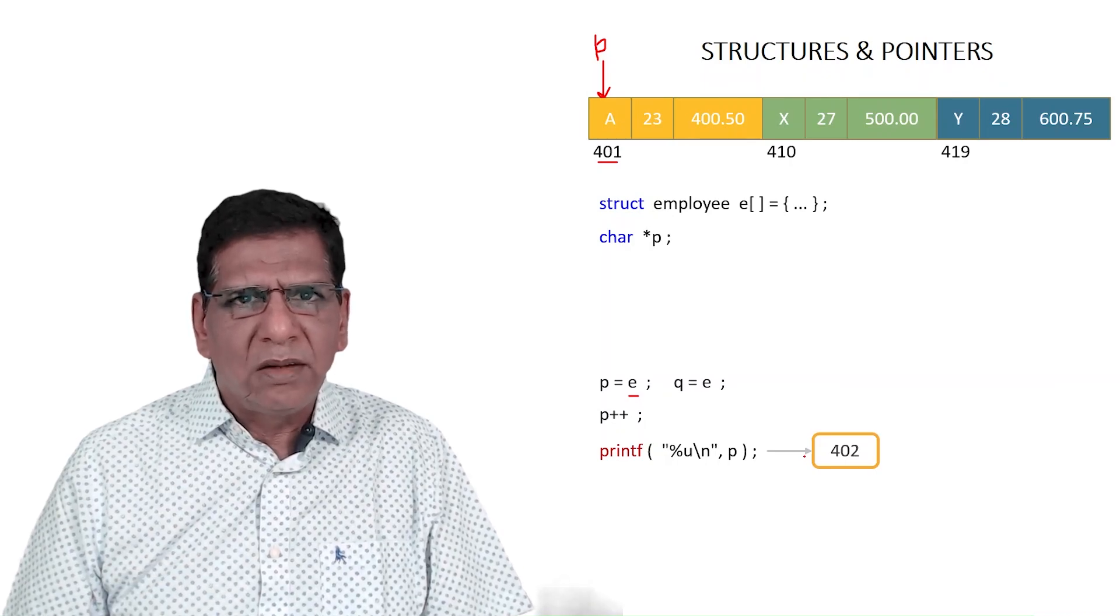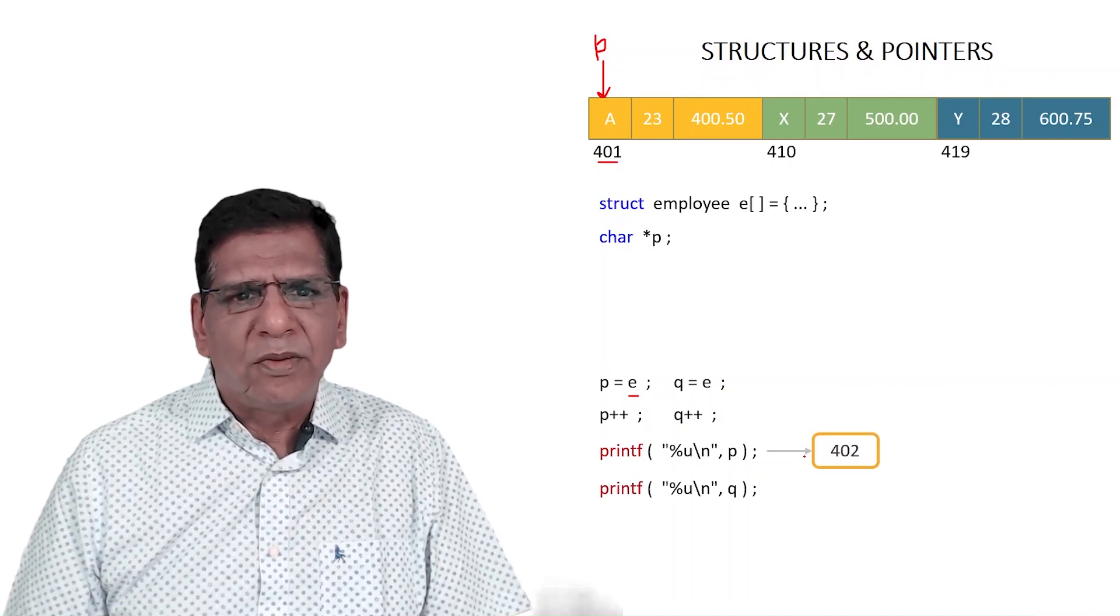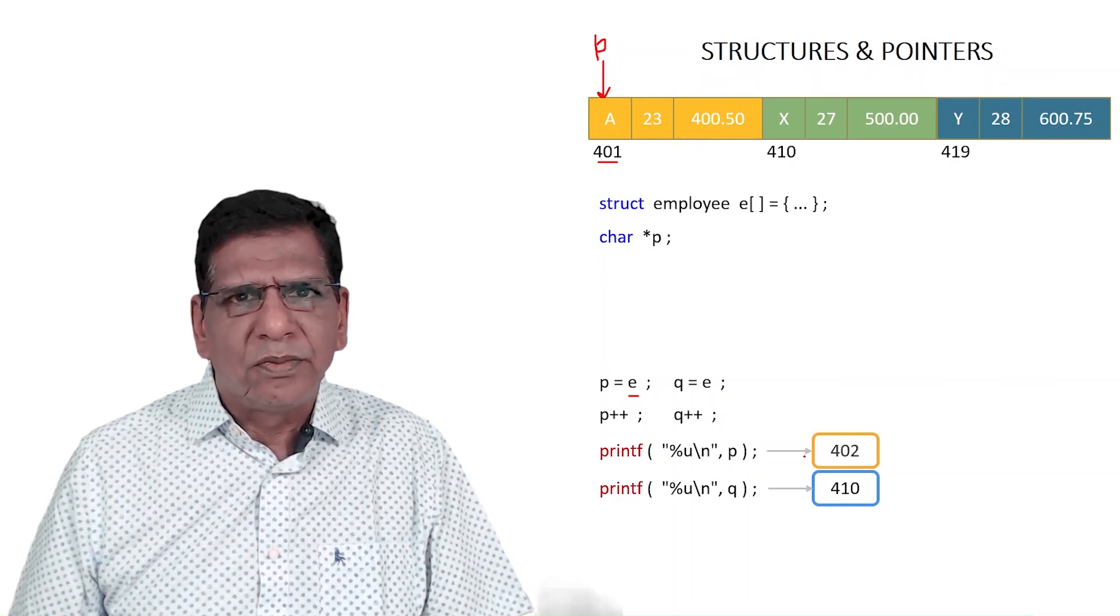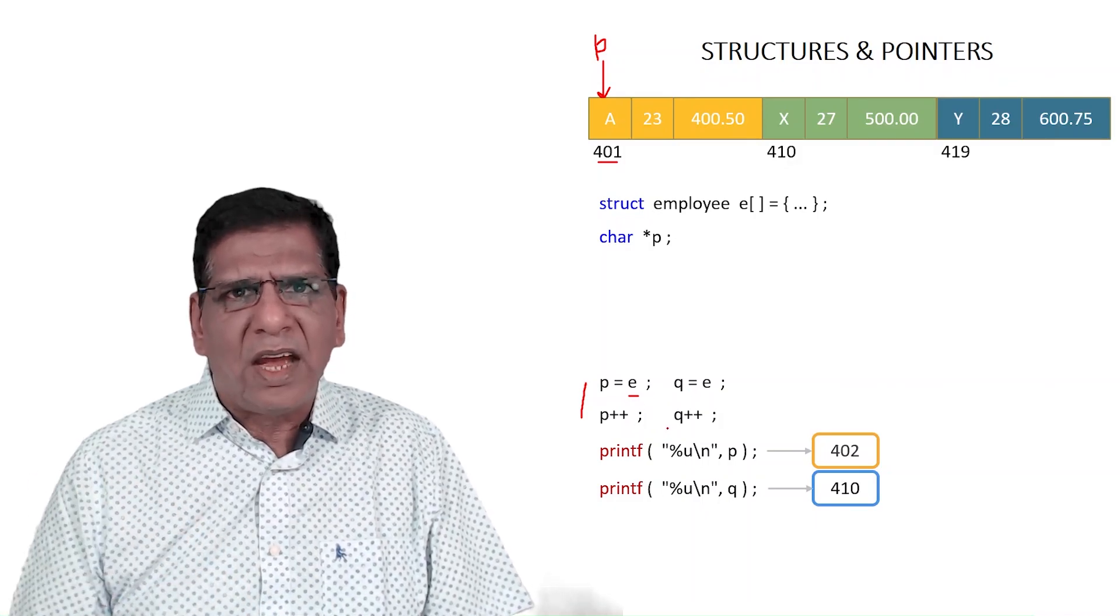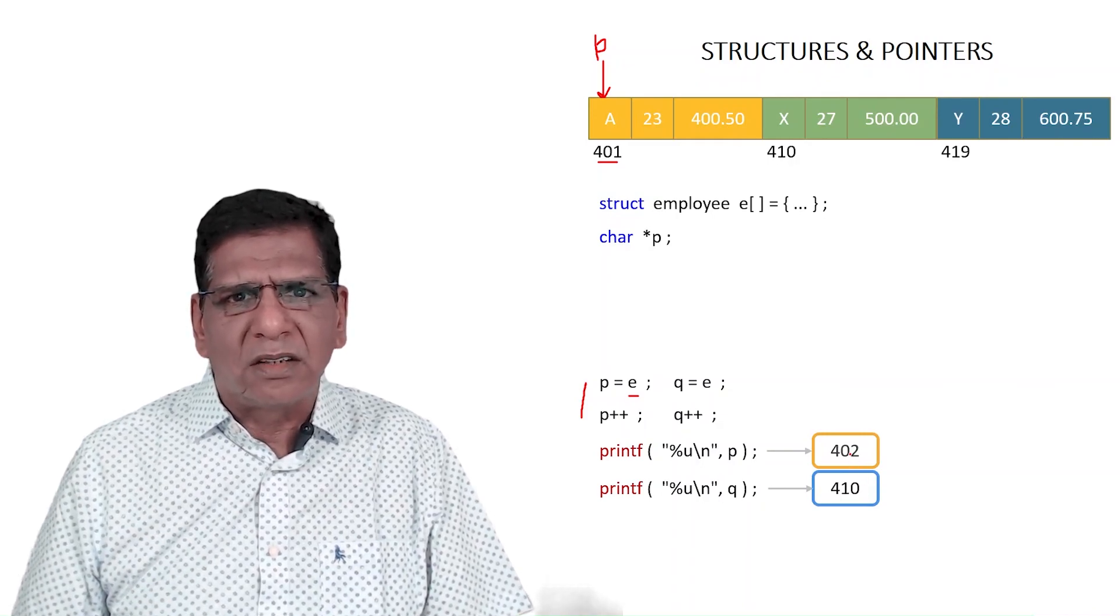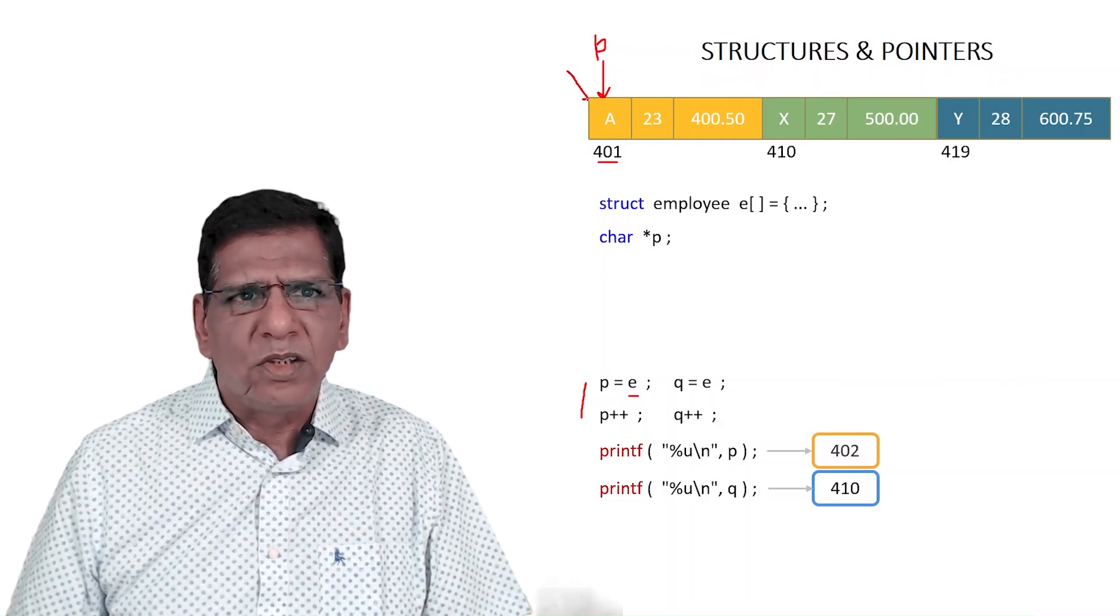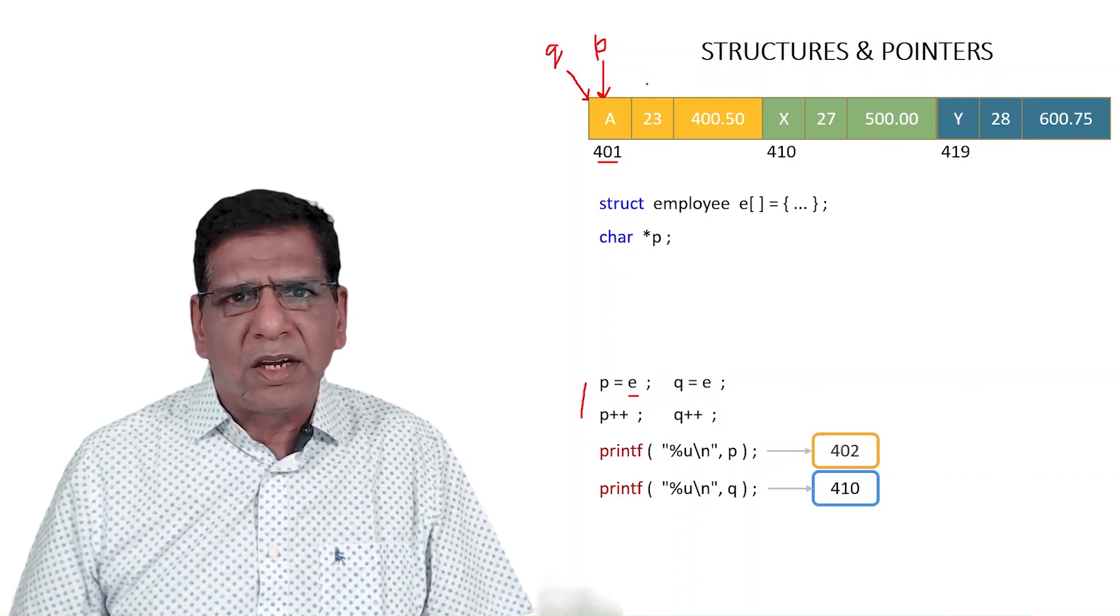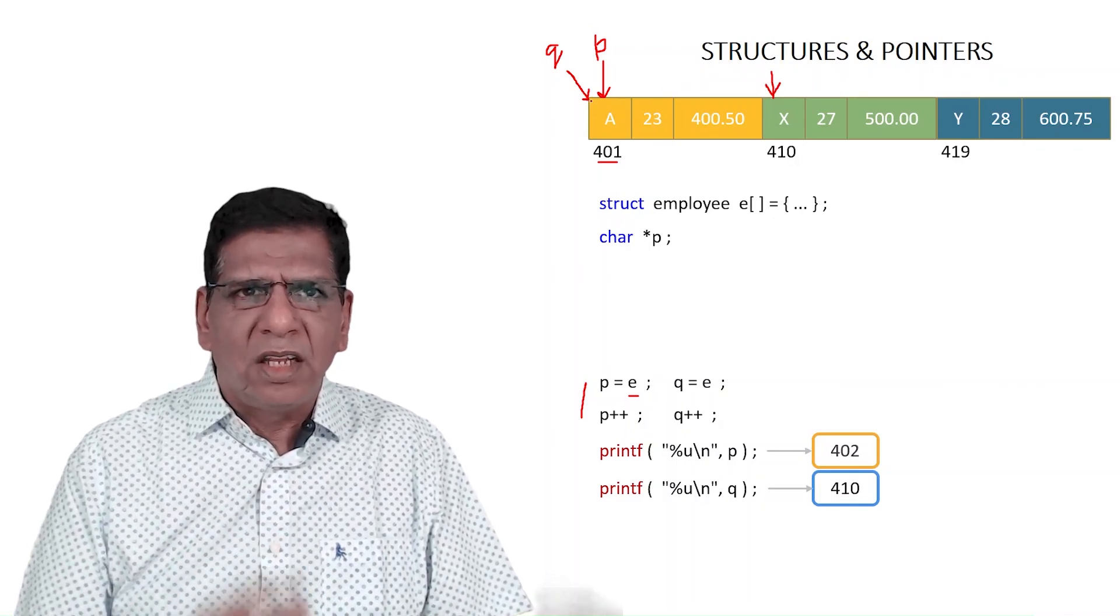Then I may do Q equal to E, again do Q++, and then print the value of Q. I want this to give me 410. A char pointer on incrementation takes you to the next char. Then I must think of Q as a pointer which will take me to the next structure. Now Q is pointing here, so also is P, but if I increment Q, if I want Q to take me to the next structure, I should think of Q as a pointer to a structure.